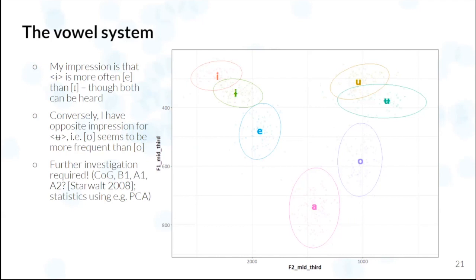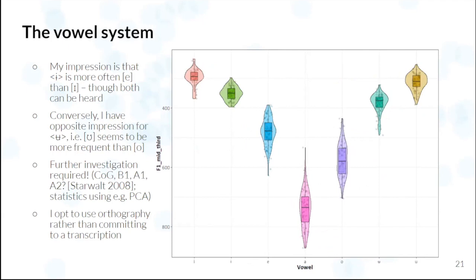And so there's definitely further investigation required using different measures, potential statistical techniques, but this is not the focus of this talk. And rather than commit to a given transcription, I'm going to just use the orthography from here on out. And I should say that F1 is the major correlate here to distinguish the vowels, and I'm going to be using this for simplicity throughout.